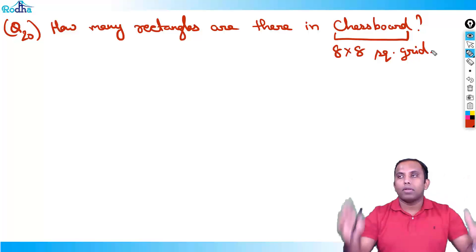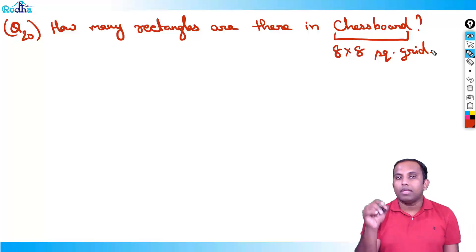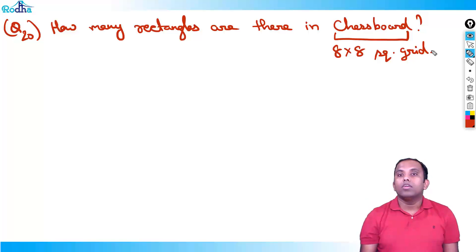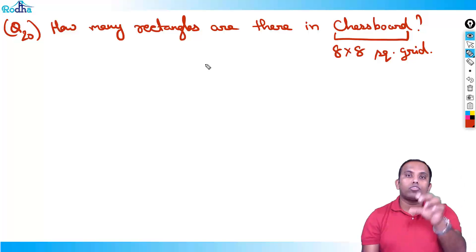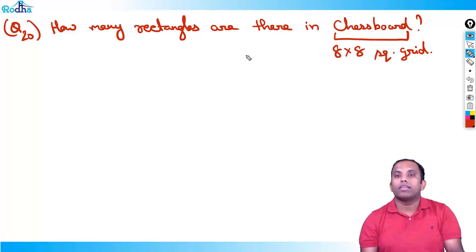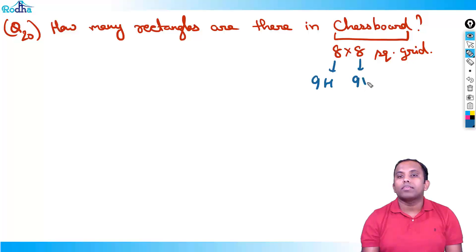A chess board is an 8×8 square grid — length and breadth are equal. For a 3×5 grid we have 4 horizontal and 6 vertical lines. For an 8×8 grid: 8+1 = 9 horizontal lines and 8+1 = 9 vertical lines.